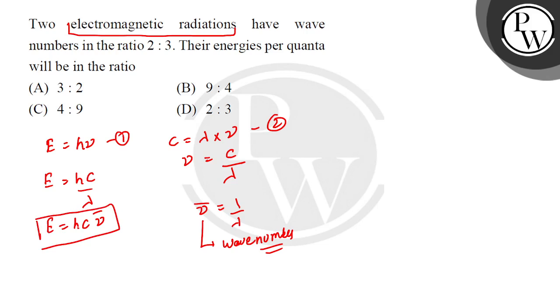So what are you seeing? Here, the Planck constant is constant, the speed of light is constant for electromagnetic radiation, and the energy and wave numbers are directly related.